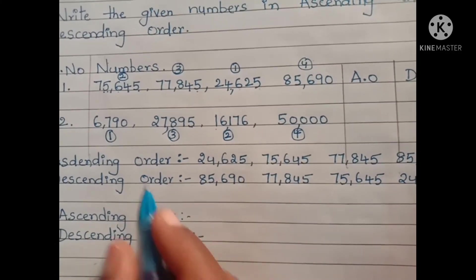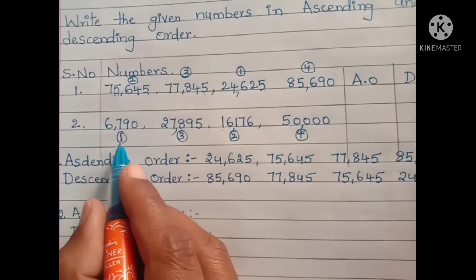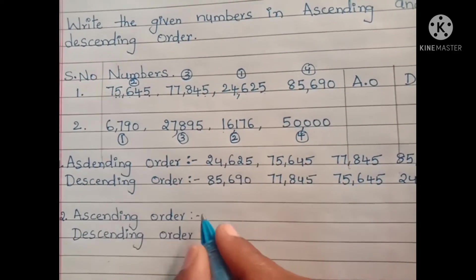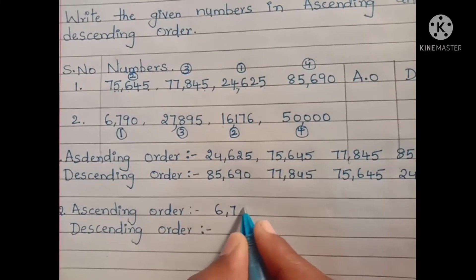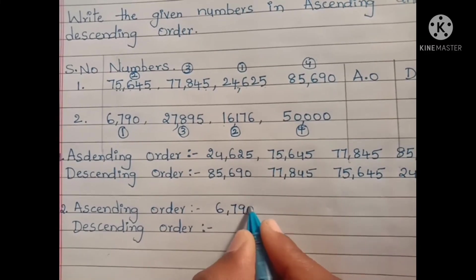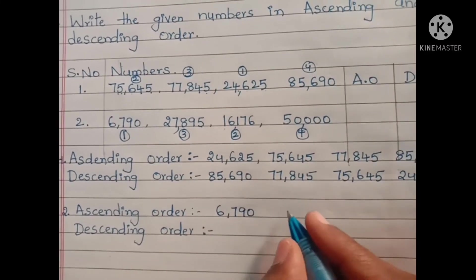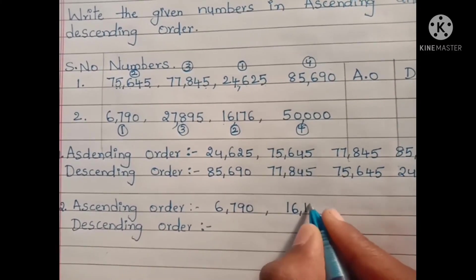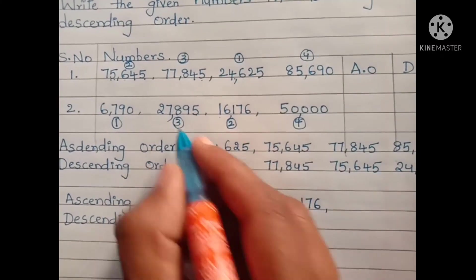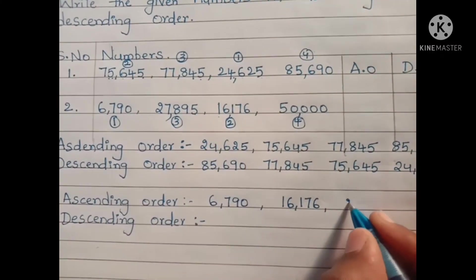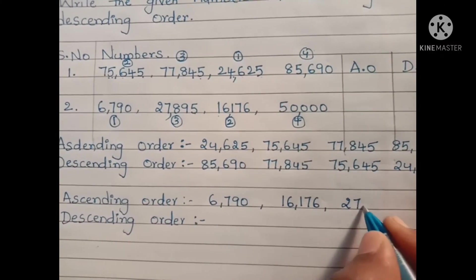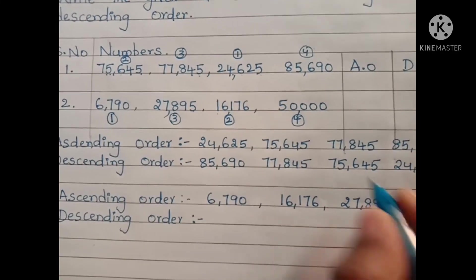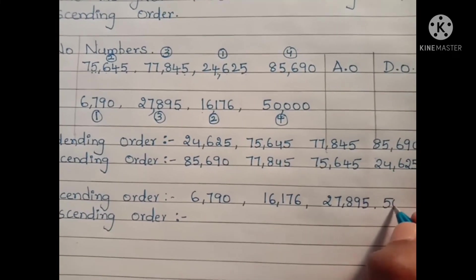Now write the ascending order — smallest to biggest: first 6,790, then 16,176, then 27,895, and the last one is 50,000.